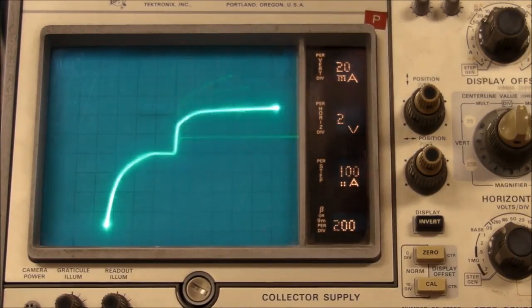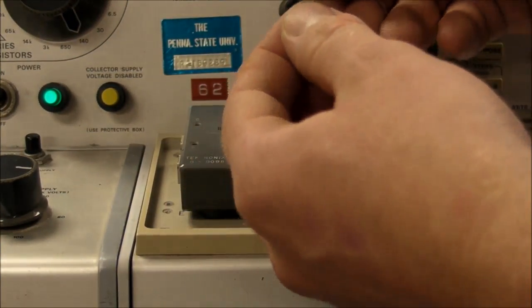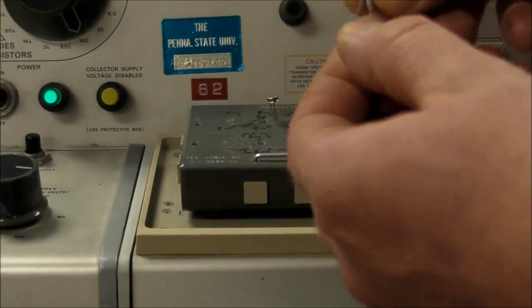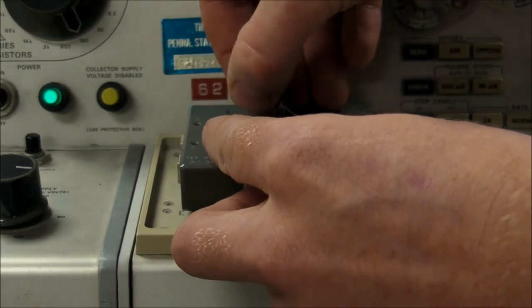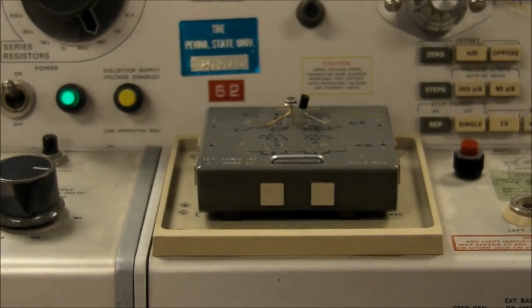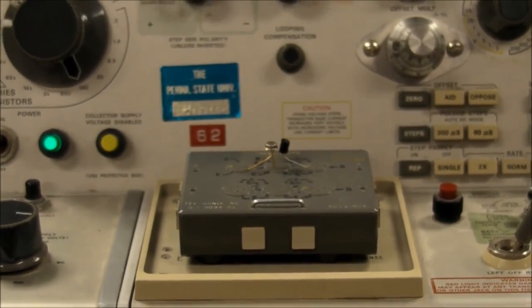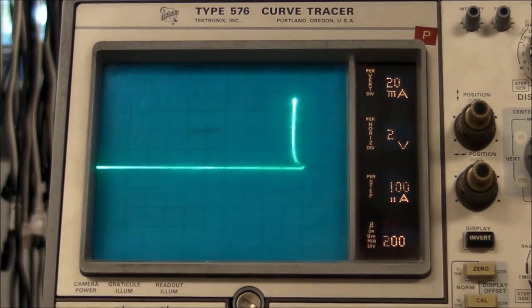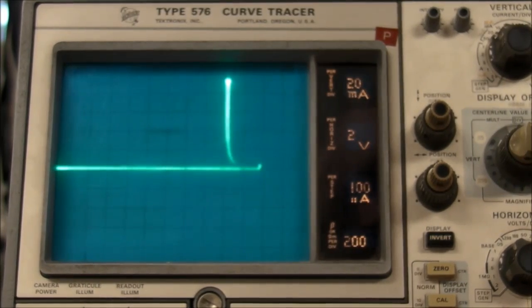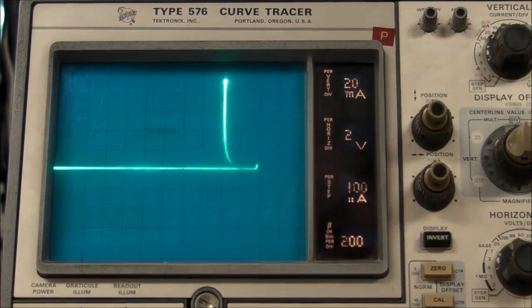But if I just make a quick change, I'm going to reverse bias both of these and leave the base floating. Okay, so now I just got current going into the emitter and out of the collector of these two NPN BJTs, and we're looking at the 3904 and the SWB. And you can see they both have a negative resistance region.